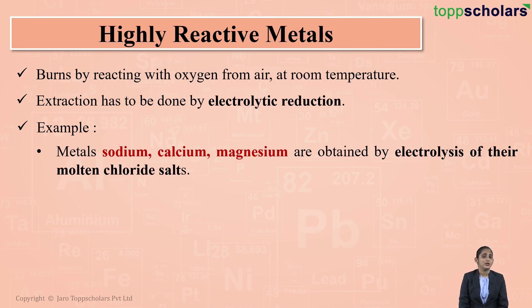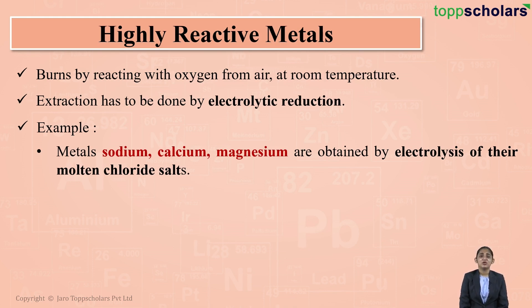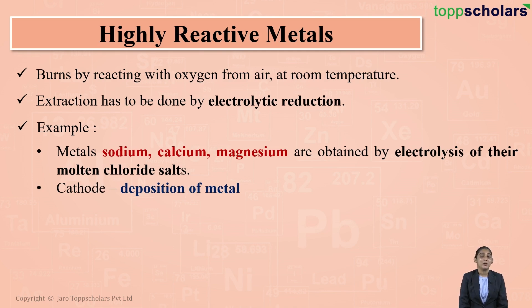Highly reactive metals such as sodium, calcium, and magnesium can be extracted by carrying out the electrolysis of their molten chloride salts. Sodium metal is obtained from molten sodium chloride, calcium from calcium chloride, and magnesium from magnesium chloride. During electrolysis, the metal gets deposited at the cathode.